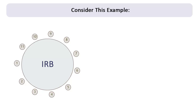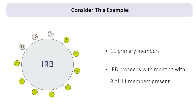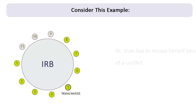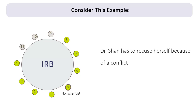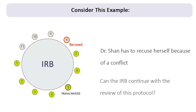Consider an IRB with a total of 11 primary members. Eight members are present at a meeting, including a non-scientist. Quorum is met and the IRB proceeds with the convened meeting. The IRB has five research protocols to review. When they get to the third protocol, Dr. Shan, who is a co-PI on the protocol and also a member of the IRB, recuses herself from participating. Can the IRB continue with the review of this protocol?